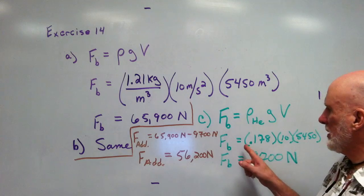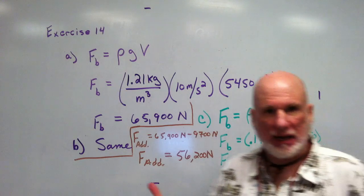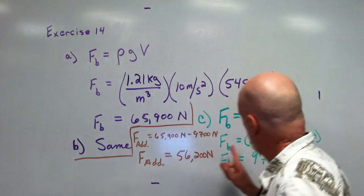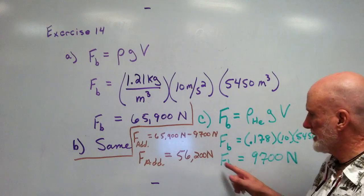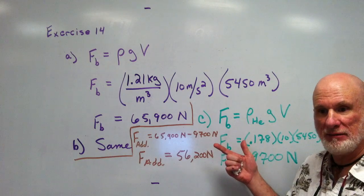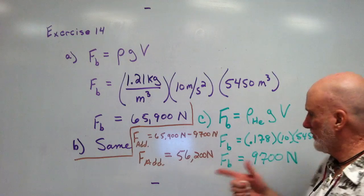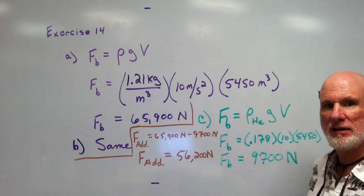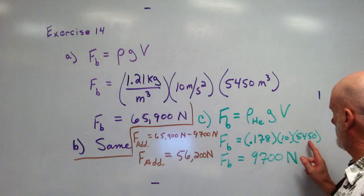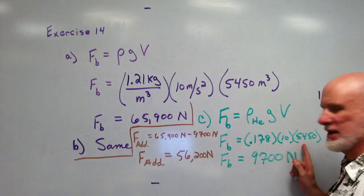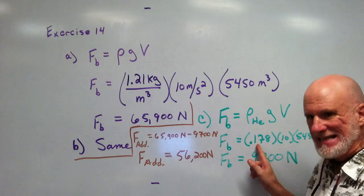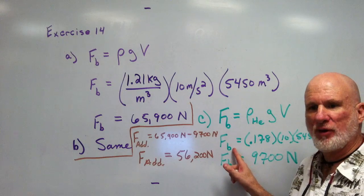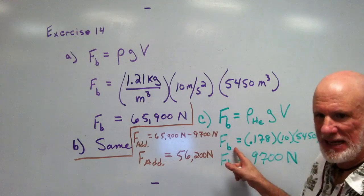Because the helium is also floating, the buoyant force equals the weight. So the weight of the helium is 9,900 newtons — same as the buoyant force, because it's floating. What's the volume of the helium? 5,450 cubic meters — that's the volume of the helium. That's the density of the helium, that's the G of the helium, that's the buoyant force of the helium. It's floating, so that's the weight of the helium.